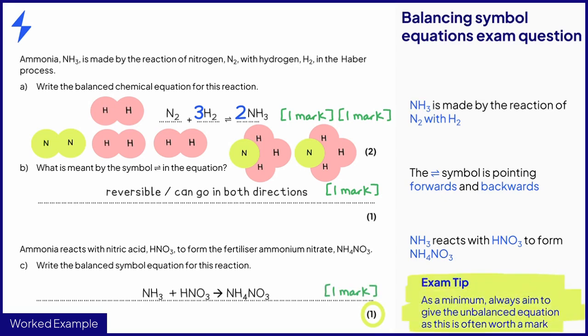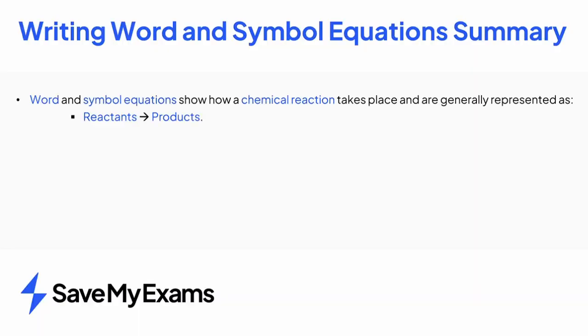In any question, it is always worth writing the unbalanced chemical equation because you may still gain one mark. Word and chemical equations show how a reaction happens and are shown as reactants forming products. The information required to write a word equation is given in the question. Look out for some of the common phrases like reacts with and is made from, amongst others.